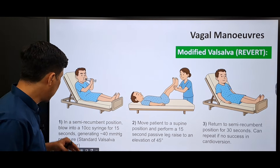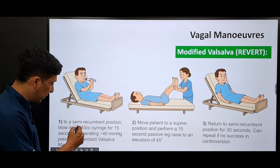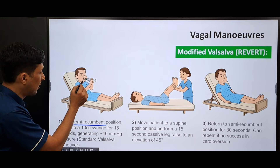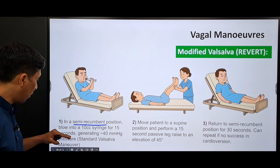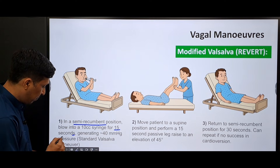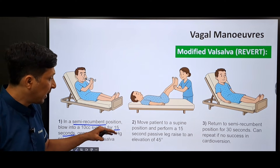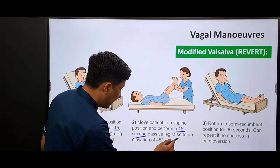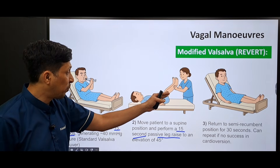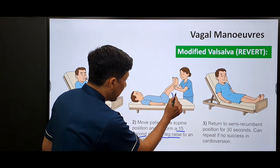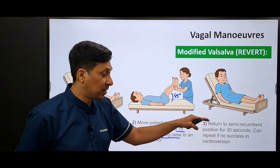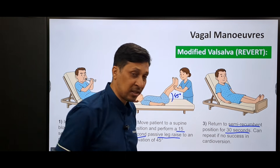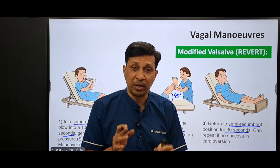It is done in three steps. In the first step, the patient is made to sit in a semi-recumbent position and asked to blow into a 10 cc syringe for 15 seconds, which creates a pressure of 40 mmHg. Then the patient is made to lie down and a 15-second passive leg raise is done by elevating the legs up to 45 degrees. In the third step, the patient is again made to sit in a semi-recumbent position for about 30 seconds.